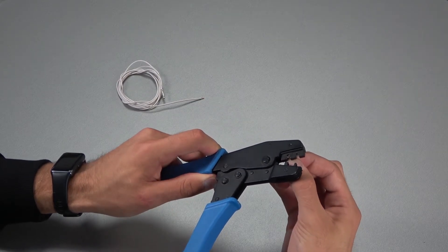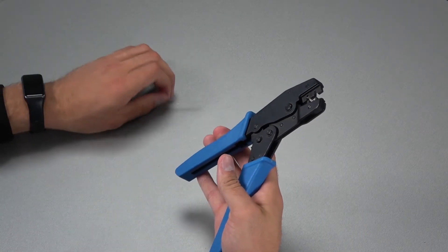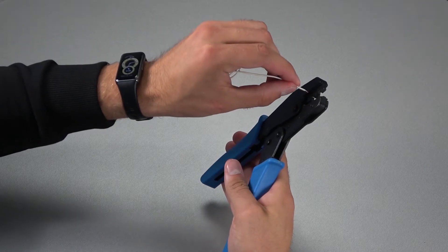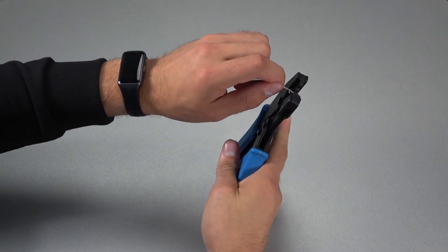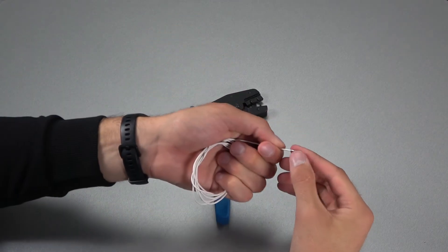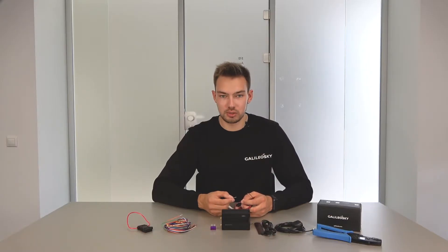Usually, it is more convenient to first install the tip into the jaws of the crimping tool and then insert the wire into the tip as described. Pay attention to which side we insert the tip. The tip is crimped.